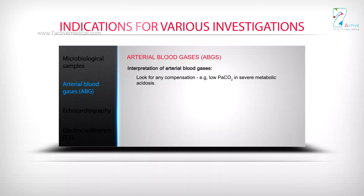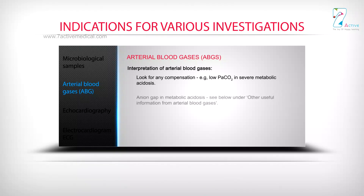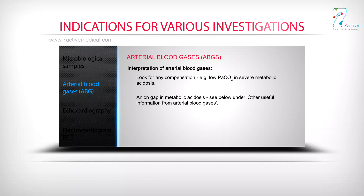Look for any compensation — for example, low PaCO2 in severe metabolic acidosis. Anion gap in metabolic acidosis: see further under other useful information from arterial blood gases. Oxygen level: is hypoxaemia present?